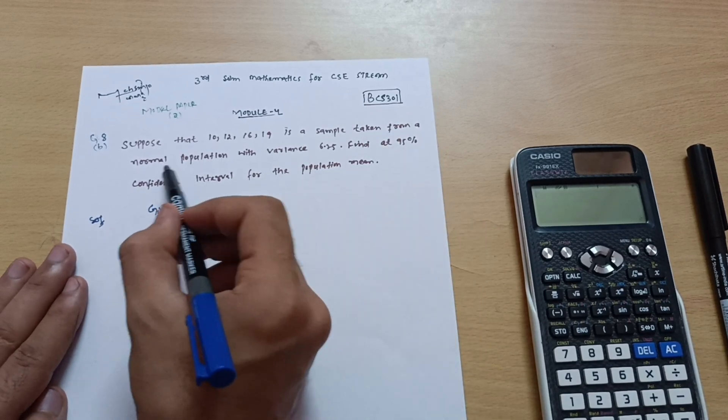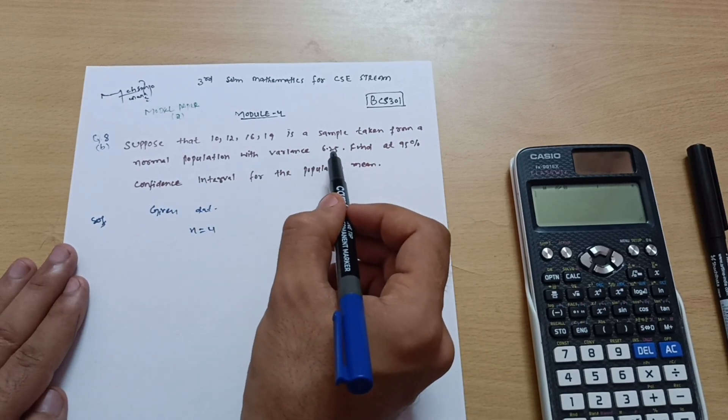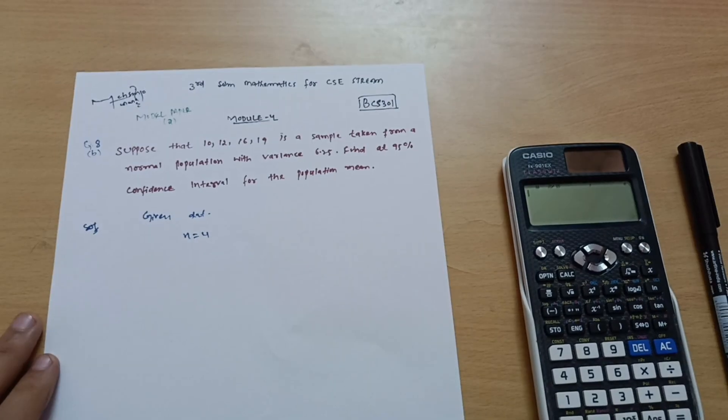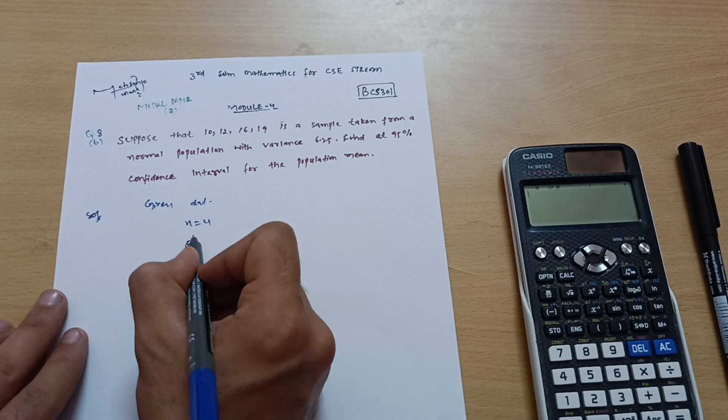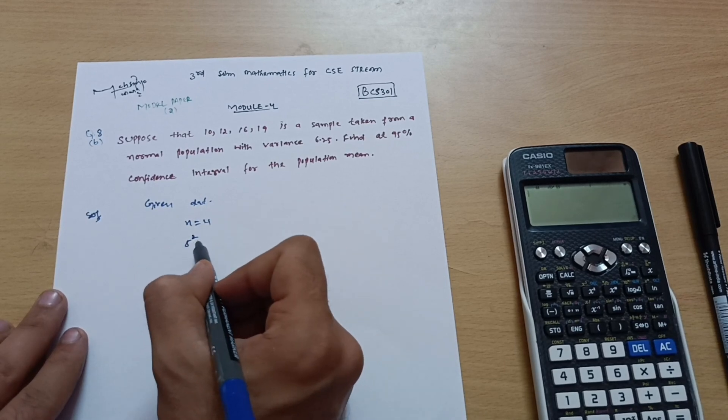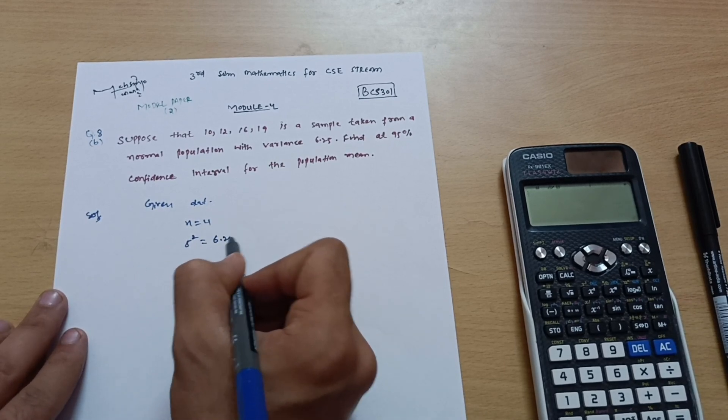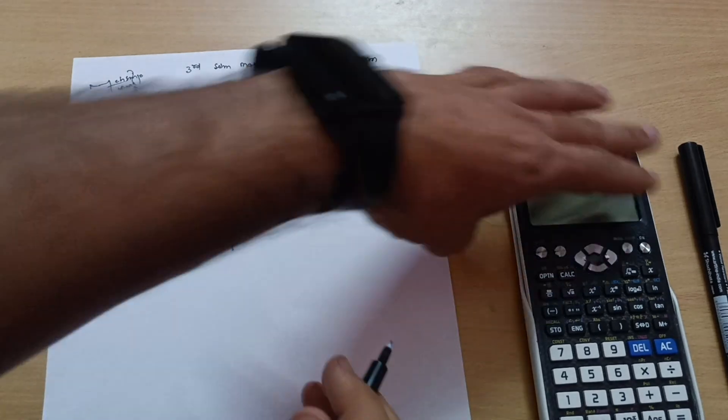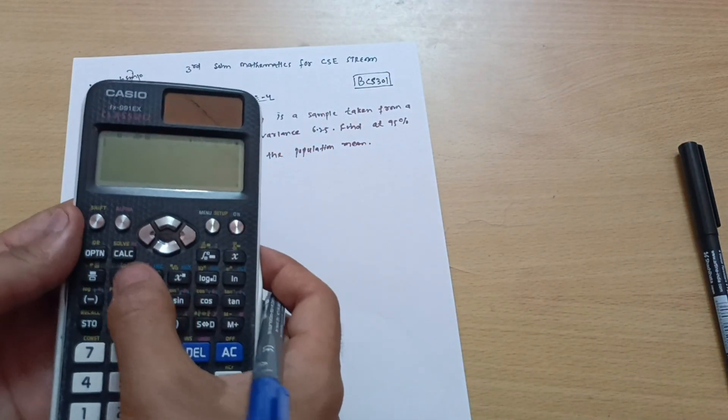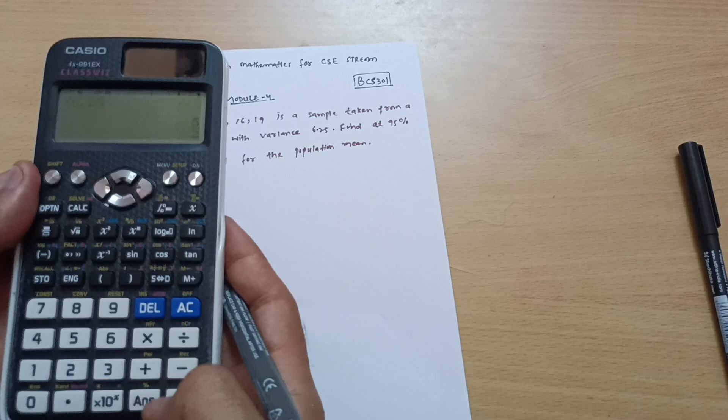From a normal population with variance 6.25. In this question the variance is given, not the standard deviation. So you should remember variance is represented as sigma squared, which is equal to 6.25. So I can write sigma is equal to the square root of 6.25.